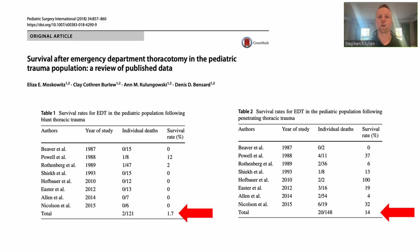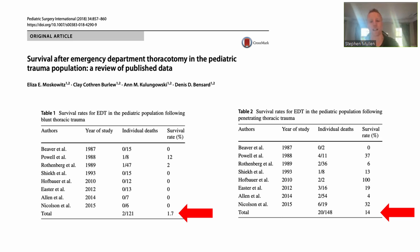A 2018 Pediatric Surgery journal review of published data shows blunt trauma outcomes are really poor at 1.7%, very similar to the adult figure of 1.4–1.5%. For penetrating trauma, the survival percentage is around 10–14%, the same as the adult data. So approximately 10% of paediatric patients who had an emergency department thoracotomy survived — not unreasonable, and in line with adult outcomes.